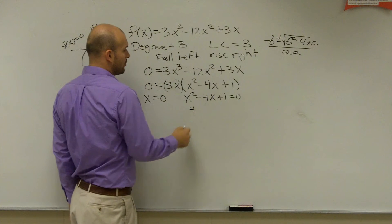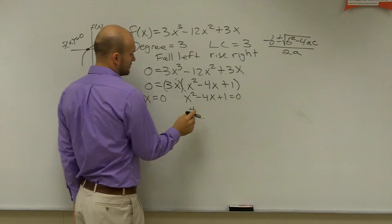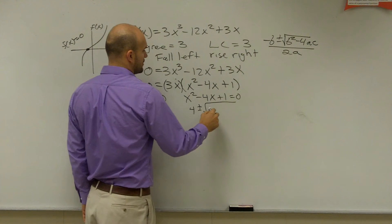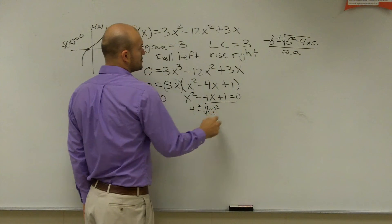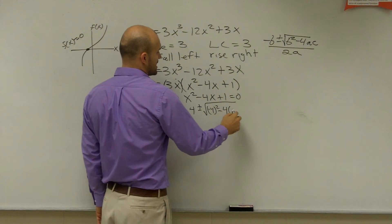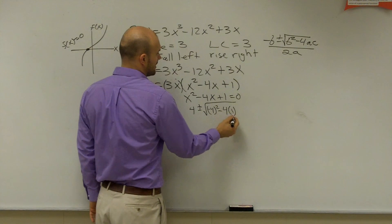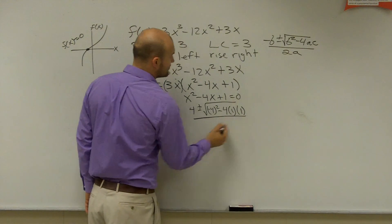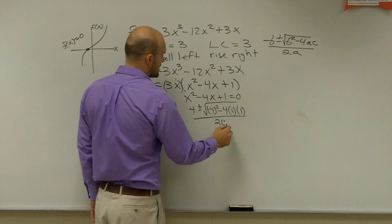So, opposite b is going to be a positive 4, positive 4 plus or minus negative 4 squared minus 4 times a, which is 1. I'm going to write in 1, a times c, which again is 1, all divided by 2 times 1.